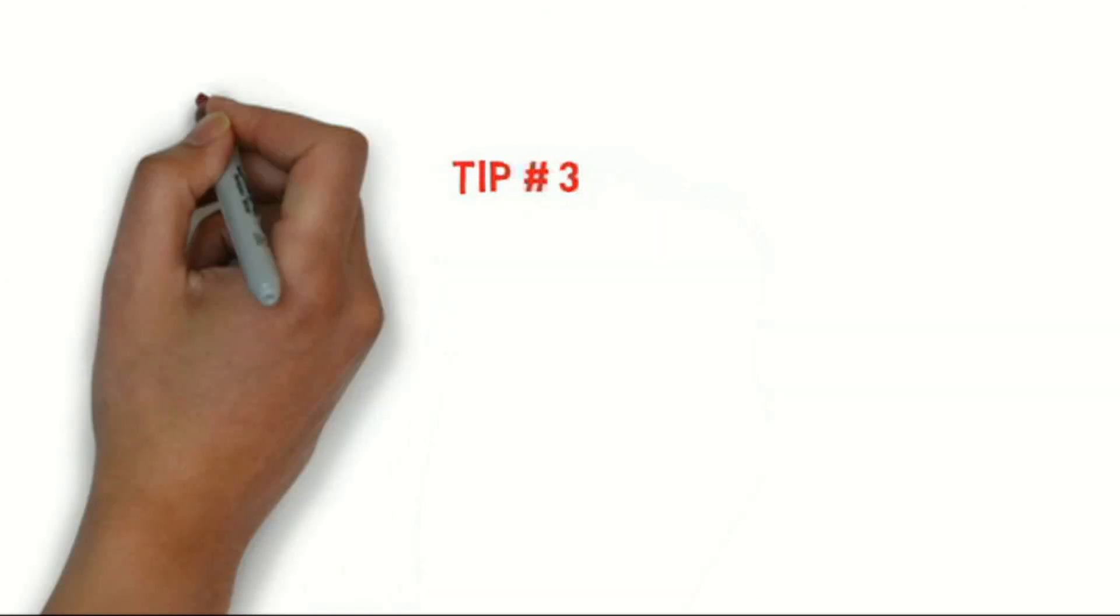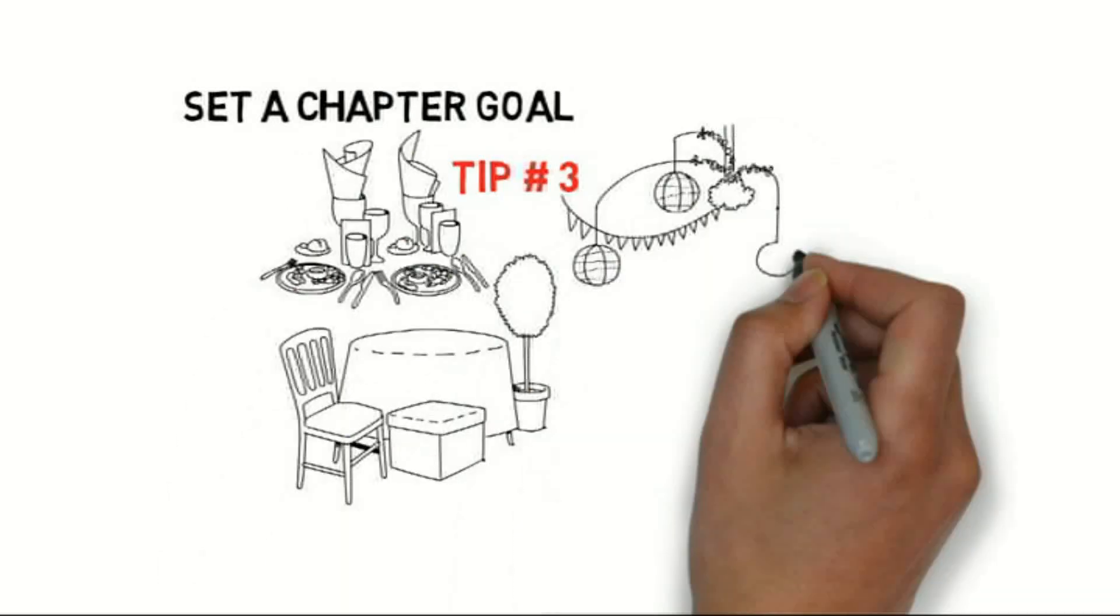Tip number three, set a chapter goal and reward your group with a pizza party if they reach it.